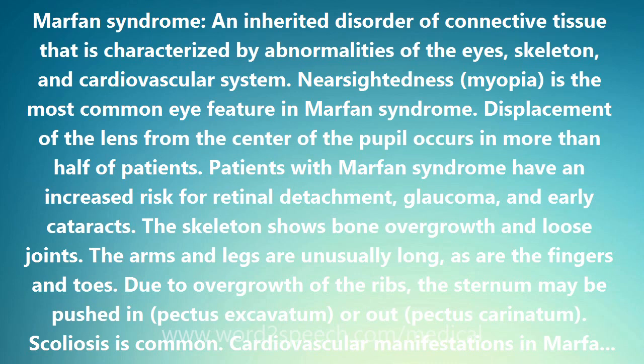Cardiovascular manifestations in Marfan syndrome include enlargement of the aorta at the level of the aortic valve, aortic aneurysm, prolapse of the mitral and tricuspid valves, and enlargement of the pulmonary artery. The major causes of disease and death in the syndrome are related to the heart and blood vessels.